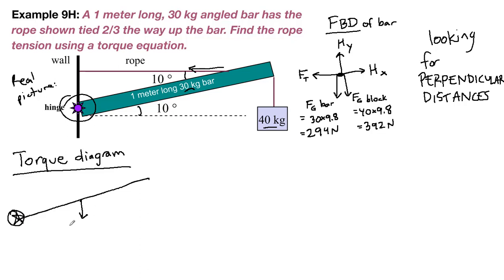There's the weight of the bar. That's 294 newtons pointing straight down. There's the weight of the block. That's 392 newtons pointing straight down. There's the tension pointing directly to the side, FT. And then the two hinge forces are acting at the axis, so we don't care about those.